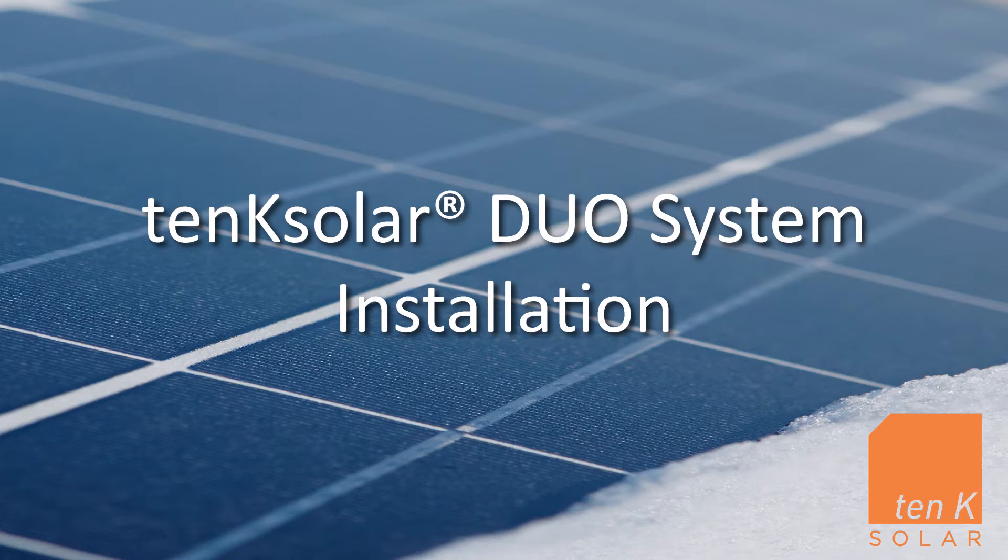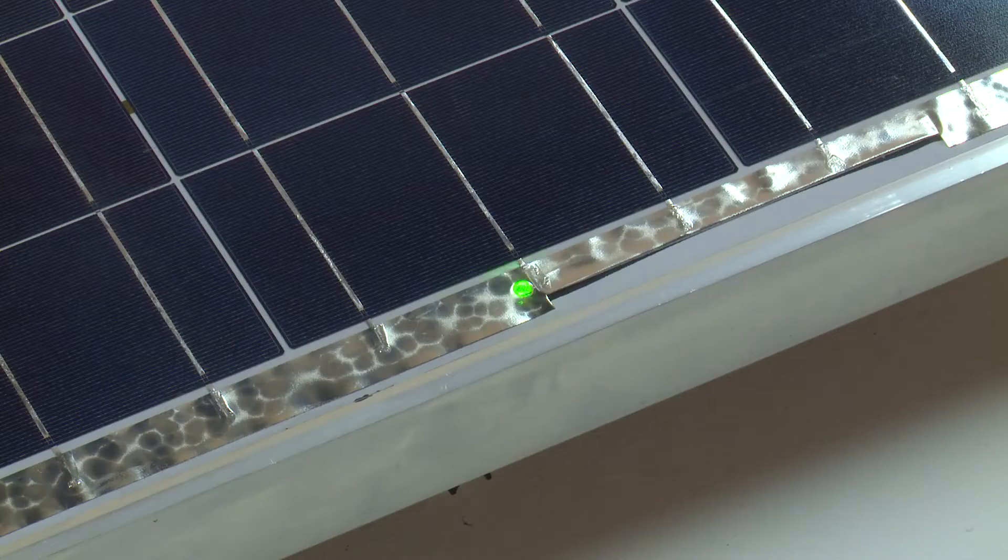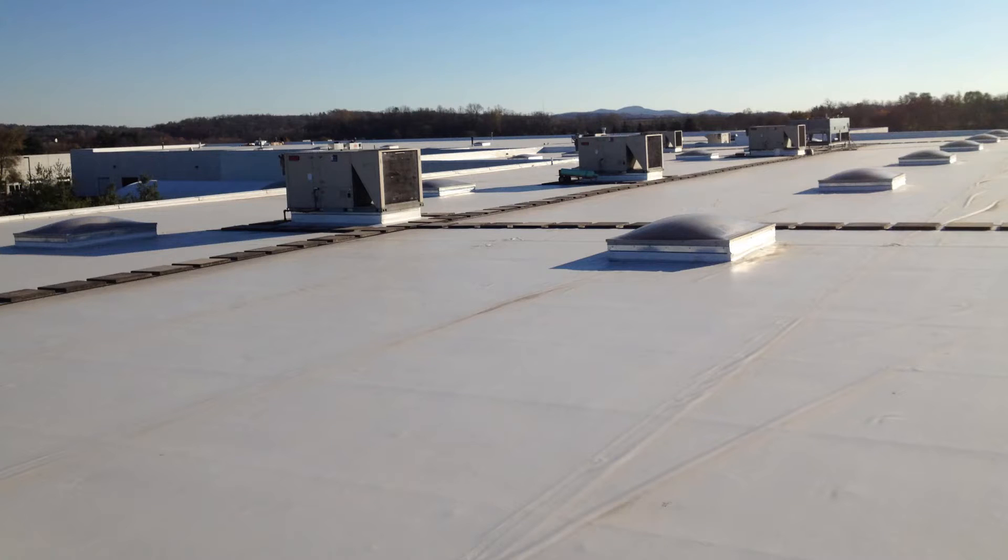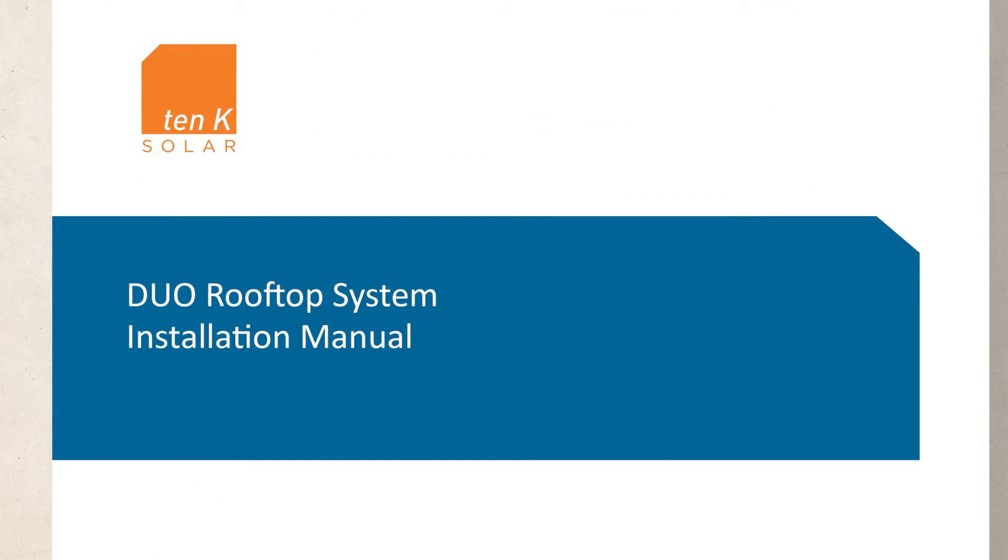Welcome to the 10K Solar Duo PV System Installation Overview. This training aid will cover the steps involved in the mechanical and electrical assembly of the PV system onto a flat commercial rooftop.